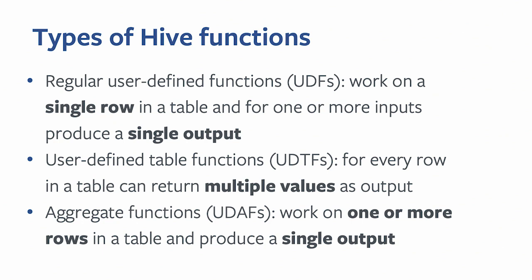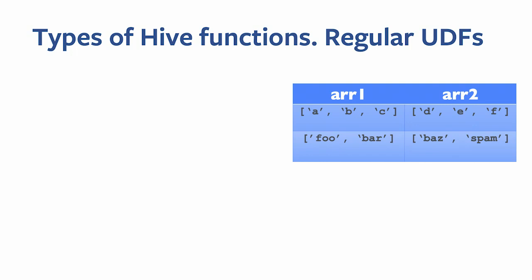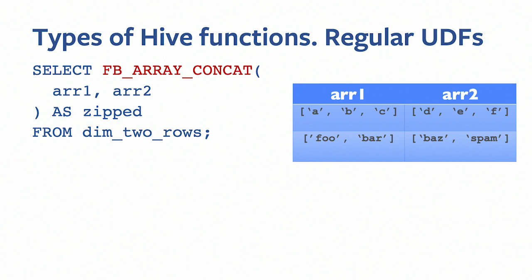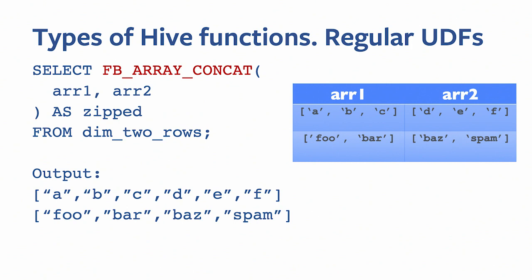To give simple examples: here we have a table with two columns, array one and array two, and a query using a custom user-defined function fbarrayconcat. This is a simple function which combines two arrays into a single array. Since we have two rows as input, we will see two rows produced as output.